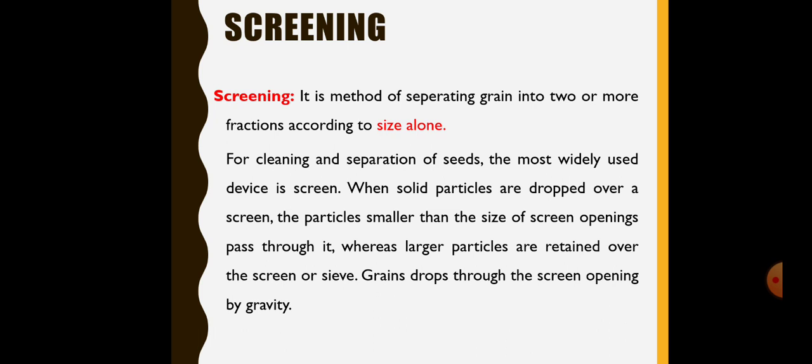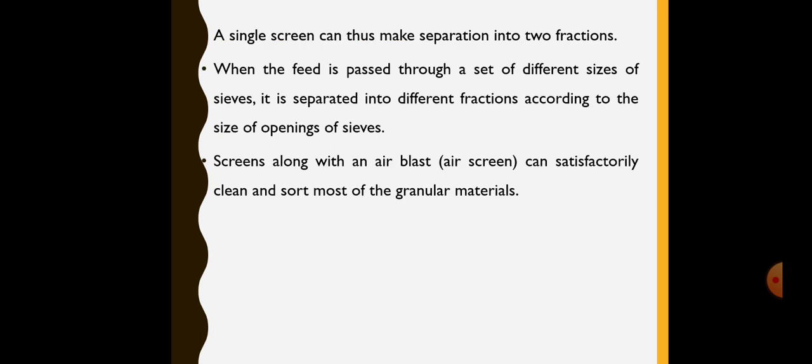The grains drop through the screen openings by gravity, by the action of gravity. The material which retains over the screen surface is called as oversize or plus material. Whereas, the material which passes through the screen openings is called as undersize or minus material. Therefore, a single screen can thus make separation into two fractions.